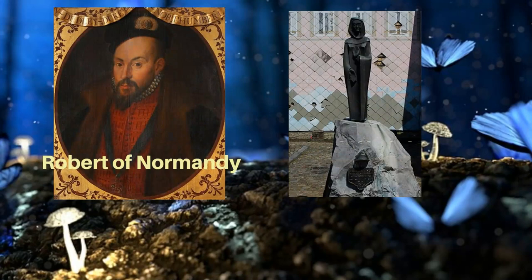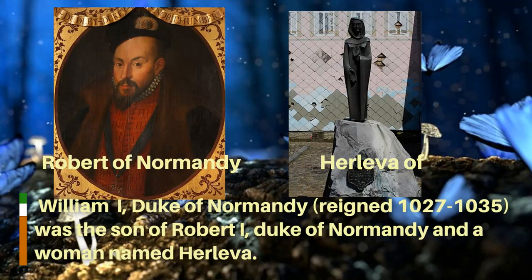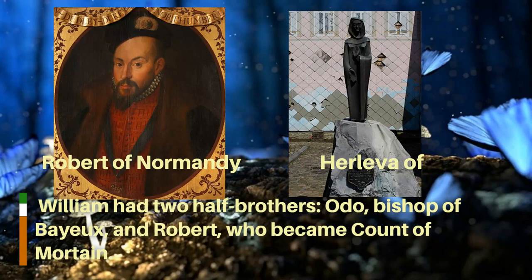William I, Duke of Normandy, reigned 1027–1035, was the son of Robert I, Duke of Normandy, and a woman named Herleva. William had two half-brothers: Odo, Bishop of Bayeux, and Robert, who became Count of Mortain.